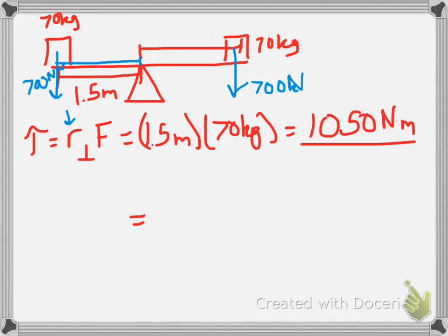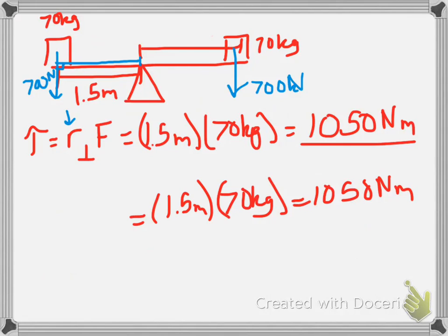Well, the only way to do that, if it is 70 kilograms in mass, the only way for it to also equal 1050 is to make sure that it is at 1.5 meters away.